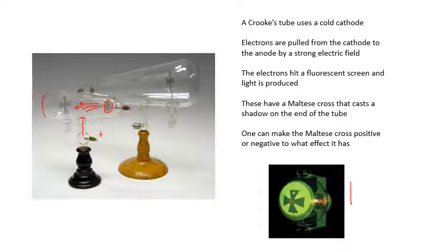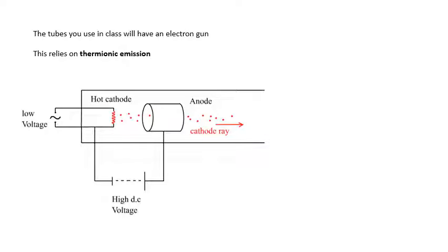Now a hot cathode - if you see these in your class, if your teacher demonstrates these to you - they rely on something called thermionic emission. And what we have here is an electron gun, and an electron gun fires a beam of electrons. Because the electrons are coming from the cathode, we call it a cathode ray.